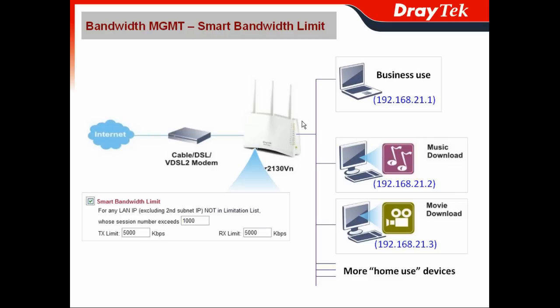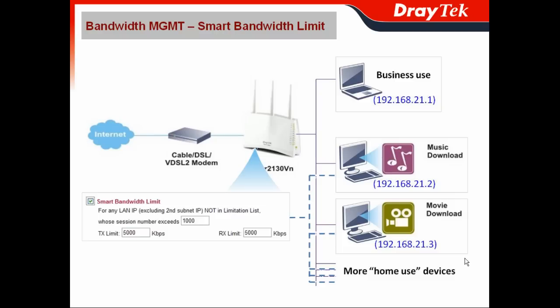Once you complete the bandwidth reservation settings for your most important device — generally the business-use device — you can enable Smart Bandwidth Limit. The settings configured in Smart Bandwidth Limit will apply to all other devices; in our case, all home-use devices. For example, when the session number exceeds 1000, you can lower the TX and RX limit to 5000 kbps for those home-use devices.